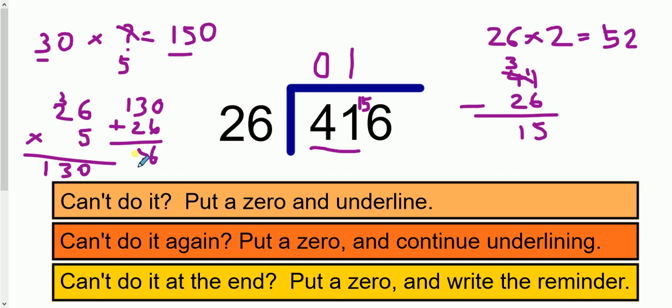Which is exactly our number there. So we will not have anything left over. And it's not 5, because we've added one more. So it's actually 6 groups of 26. So we want to put a 6 up there. There is nothing left over, so there is no remainder to put at the end.